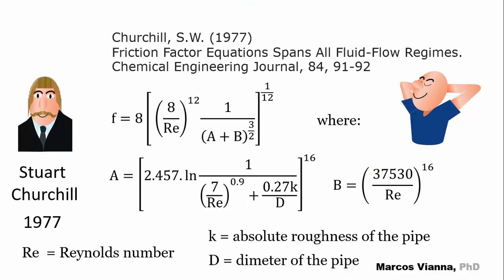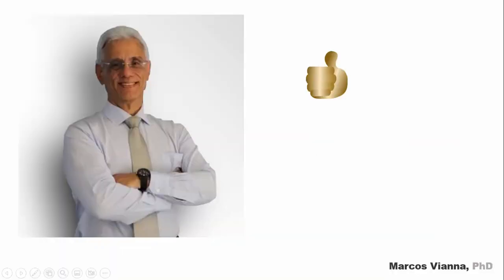Well, thank you very much, Mr. Churchill. Now, I just put this formula in my computer and forget it. The input data are the Reynolds number and the K over D relationship, and the f value is found.